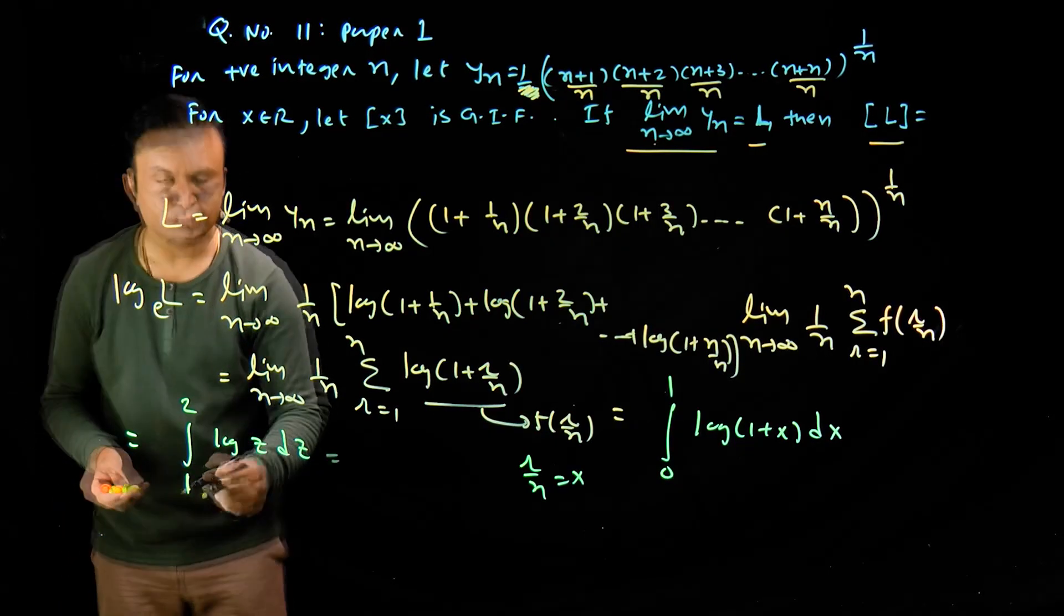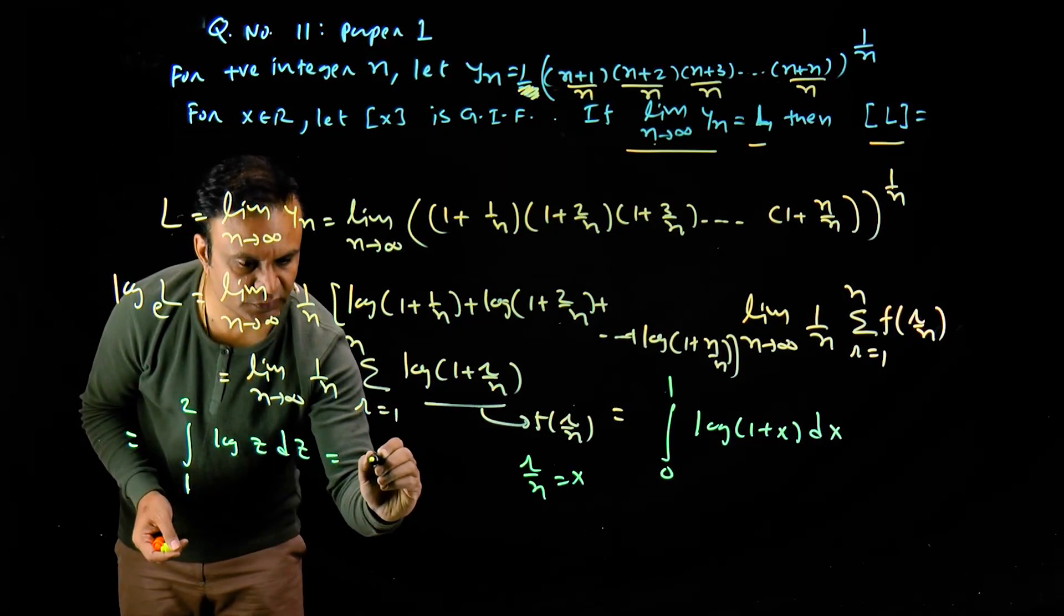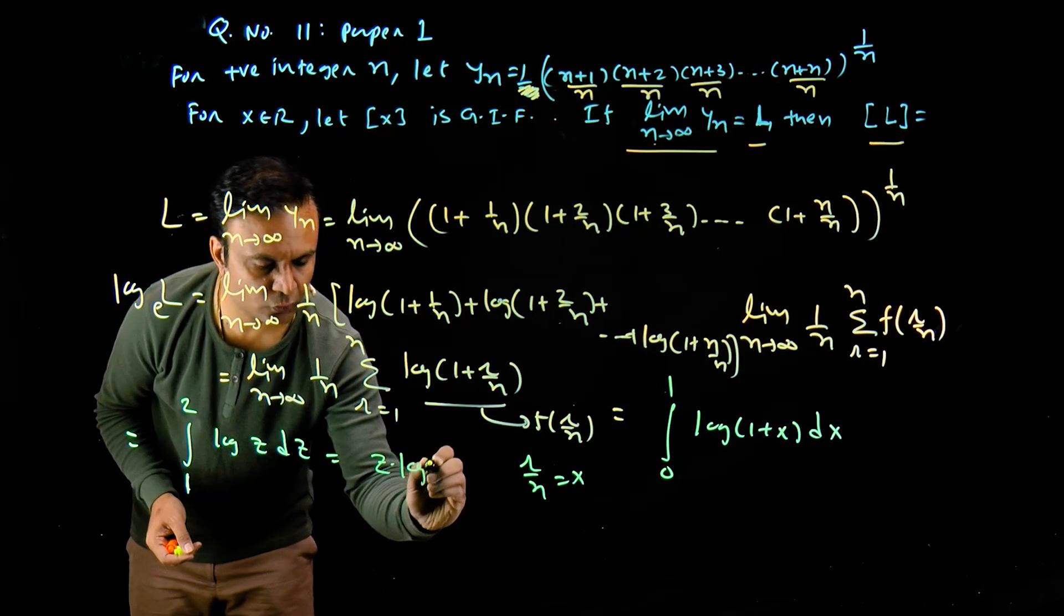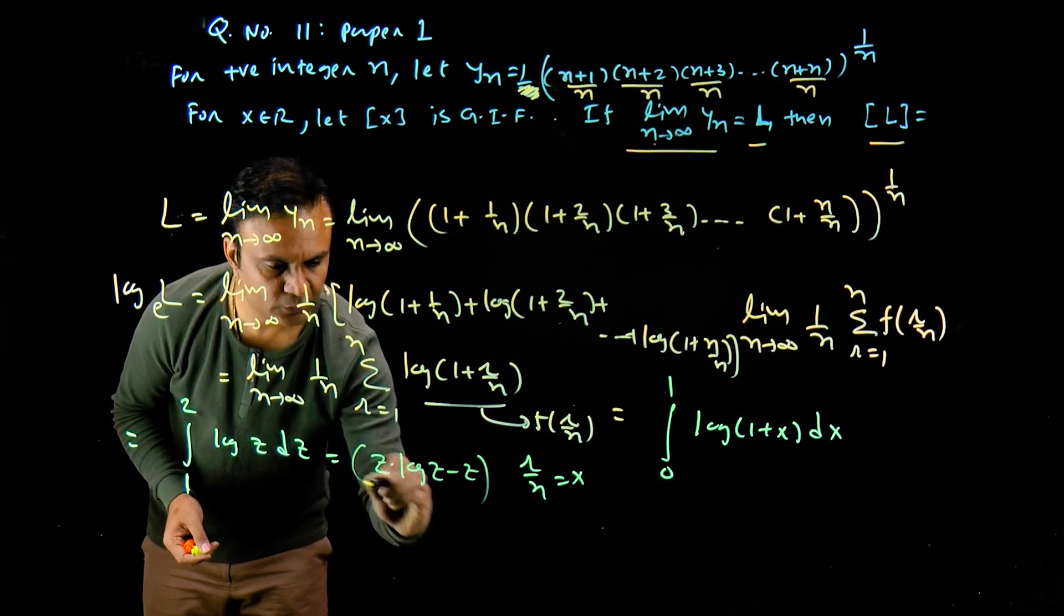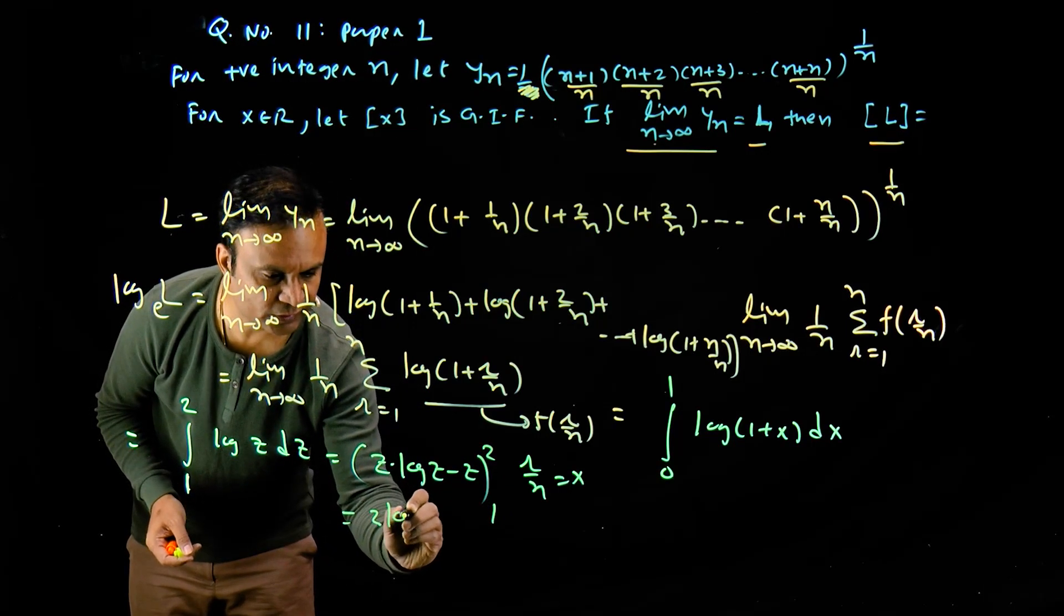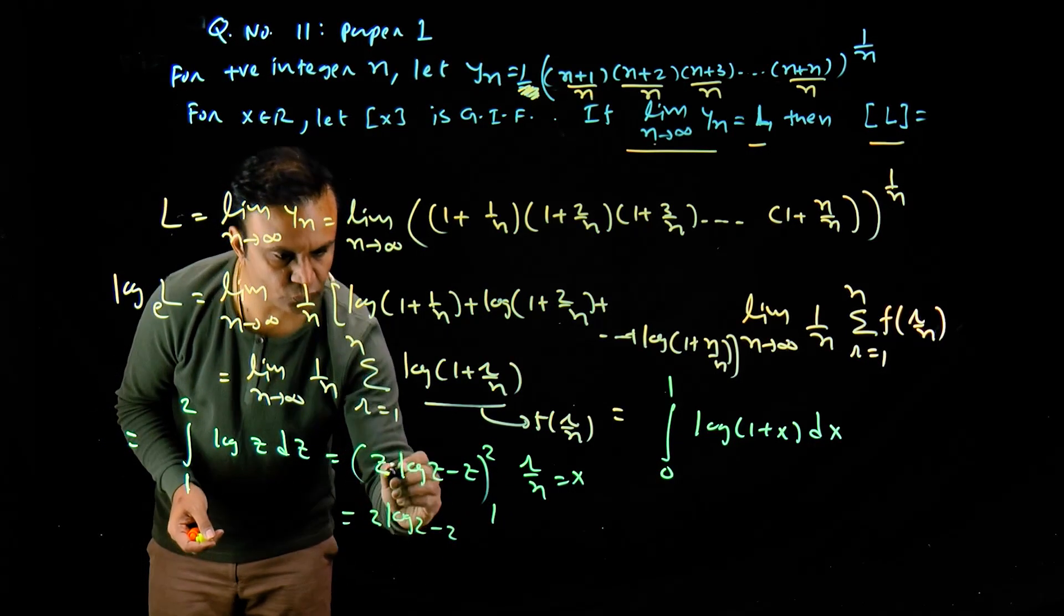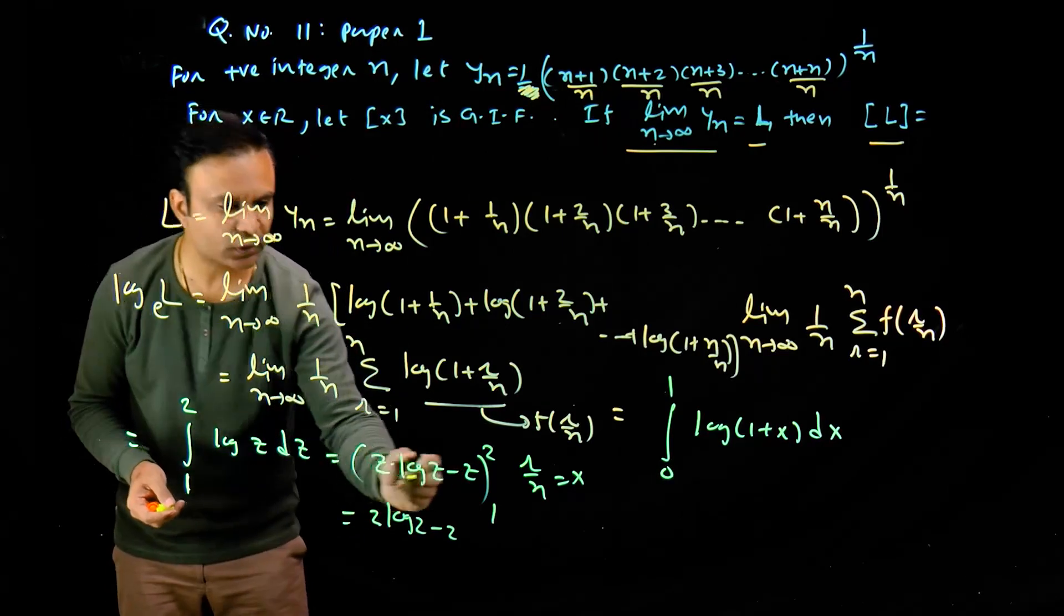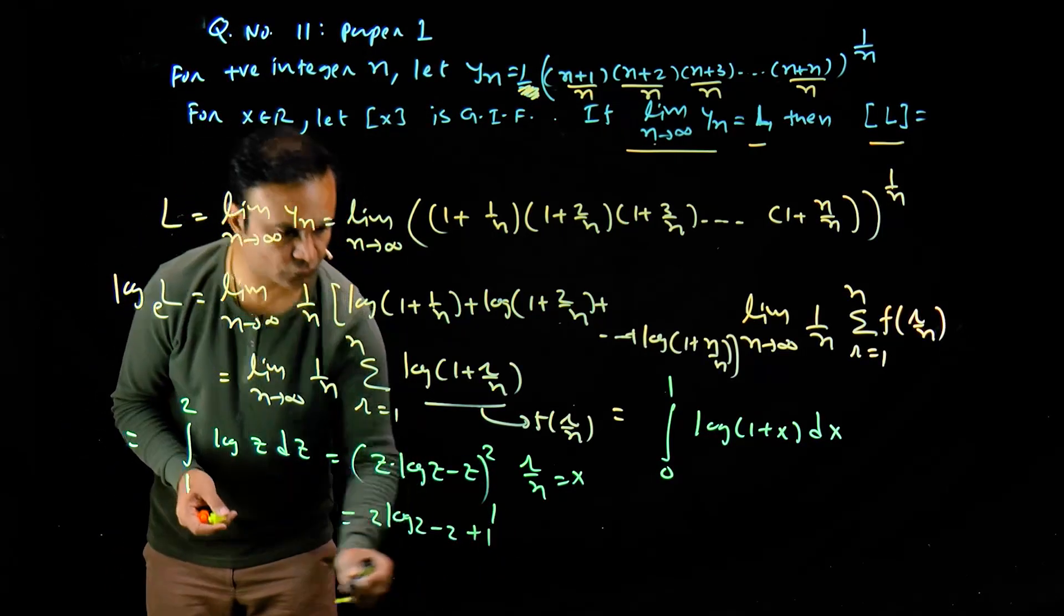So we have log of z multiply by dz. I took (1 + x) as z, so limits become 1 to 2. Now integration of this is z log z minus z for limits 1 to 2. This equals 2 multiply by log 2 minus 2. Putting 1, log 1 is 0, so this becomes plus 1.